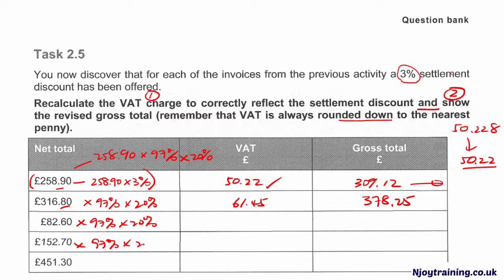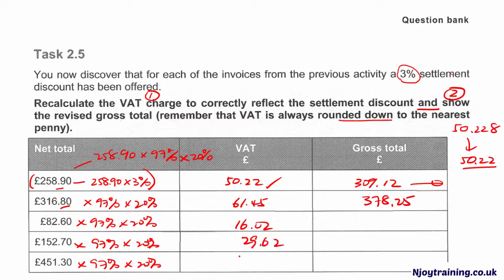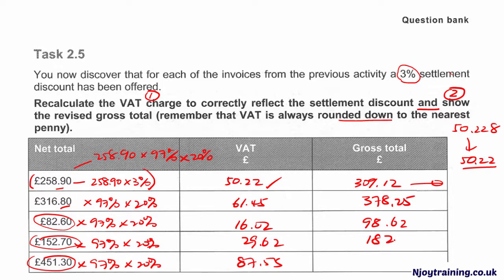Using the same method — net times 97% times 20% — in your exam, if you do lots of question practice, you'll be very quick to get this done. So that will give you 16.02, 29.62, and 87.55. Remember, all these figures need to be added back to their respective net amounts. That will give you 98.62, 182.32, and 538.85.